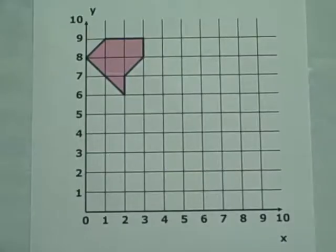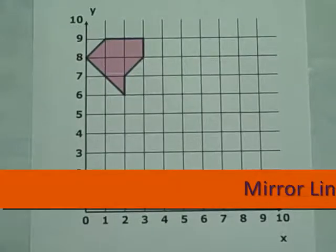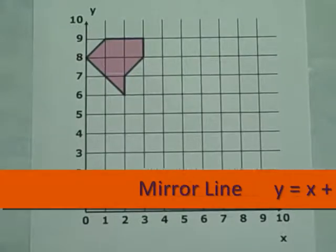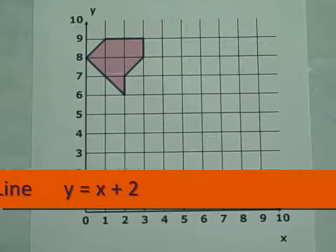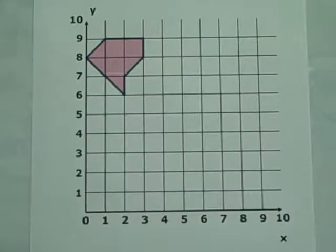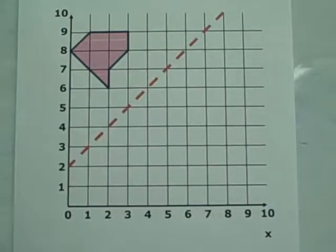For our final example, the equation of the mirror line is y equals x plus 2. This passes through (0,2), (1,3), (2,4) and so on, and is a diagonal line.